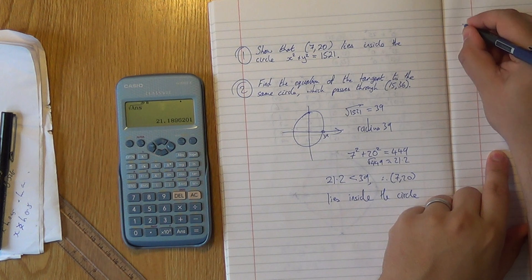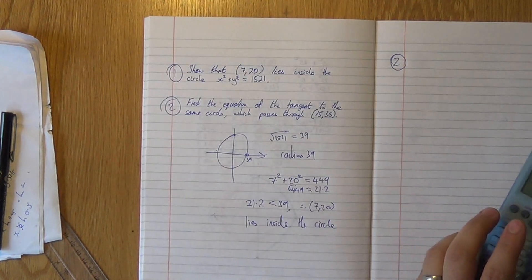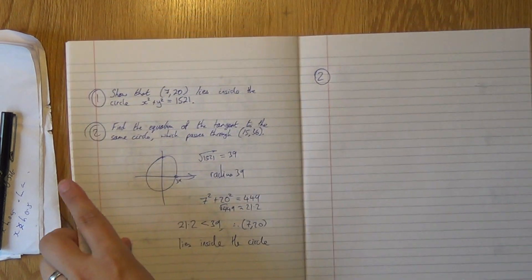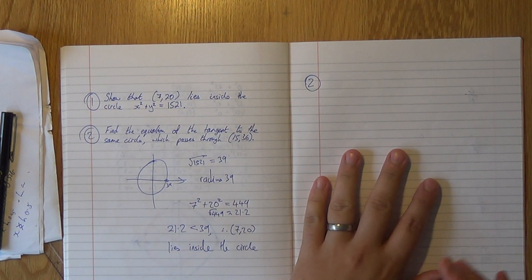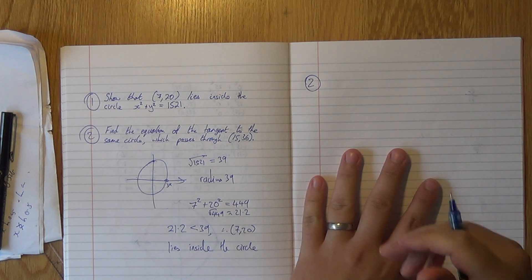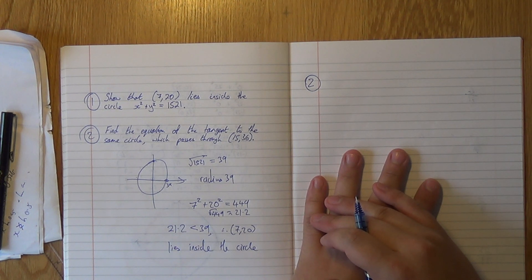So part two I'm going to do over here. We're going to work out the equation of a tangent. So that requires you to know what a tangent is. A tangent is a line that touches the circle at one point, and that means it has a property to do with its radius. And that property is that it is perpendicular.